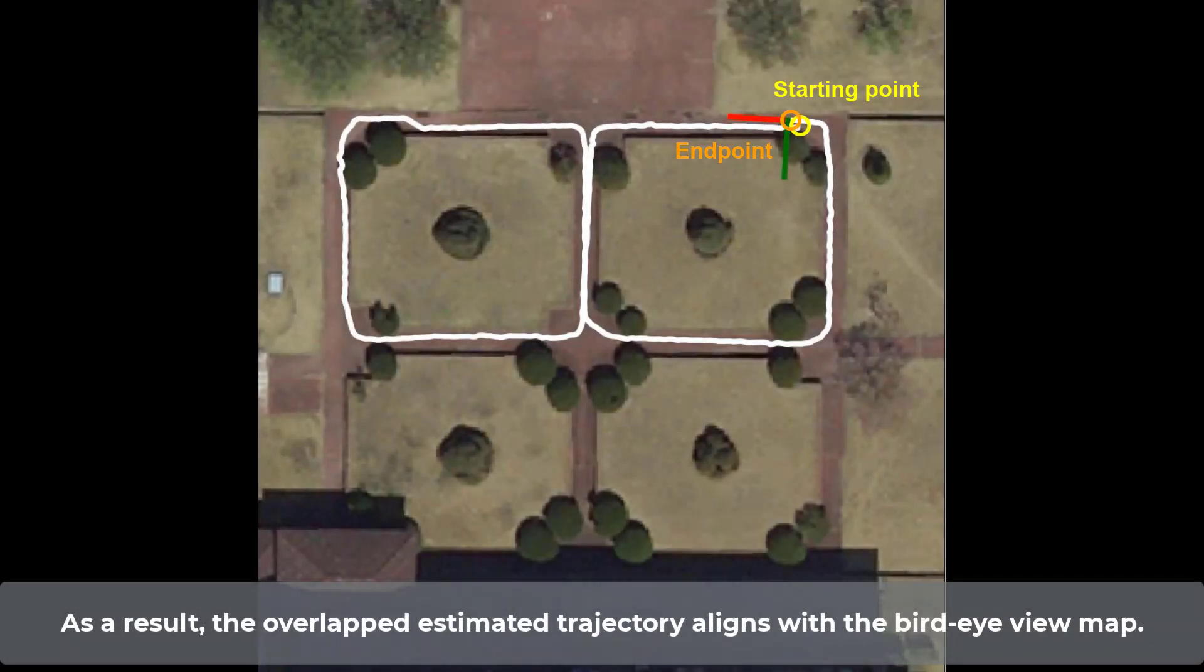As a result, the overlapped estimated trajectory aligns with the bird-eye viewmap. Thanks for watching.